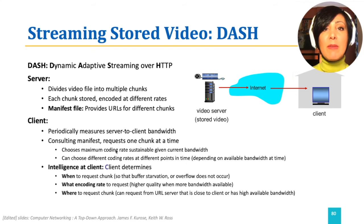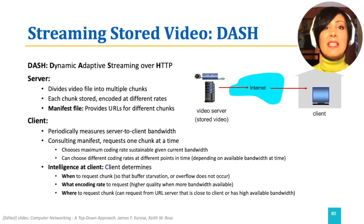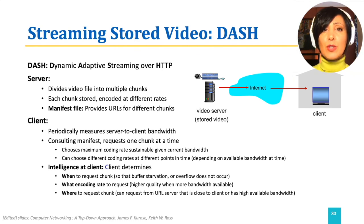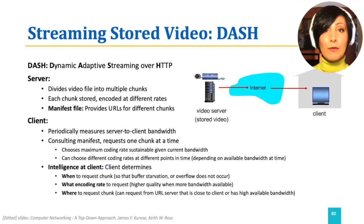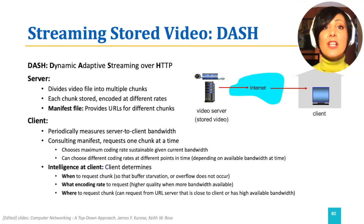When the client wants to stream a video, it first requests the manifest file. Throughout the connection, the client monitors the bandwidth of its connection to the server and, based on its device, bandwidth information, and the state of the buffer, dynamically chooses the maximum coding rate that works for the client device given the current bandwidth. The intelligence of DASH is at the client — the client decides what file segment to request based on device and bandwidth, when to request the chunk so the playback buffer won't overflow or underflow, and where to request the object file from based on the manifest file.